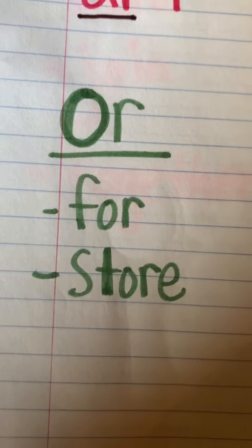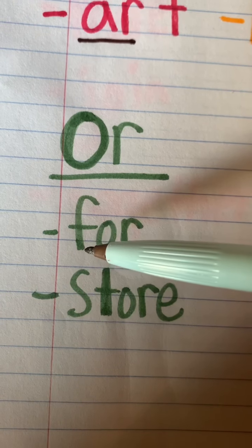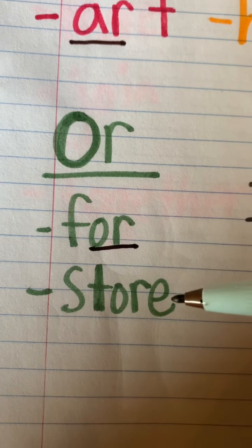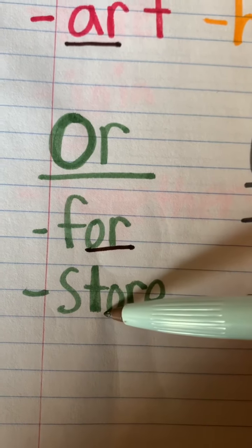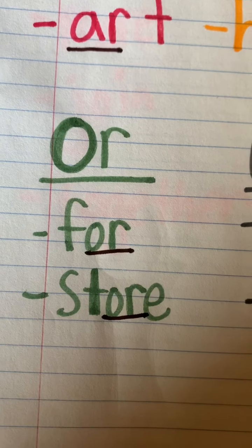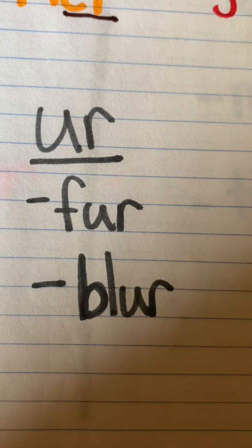Next we have OR which says OR like in for or store. The last one is UR.